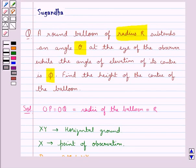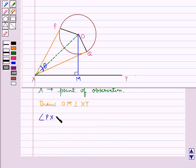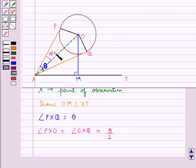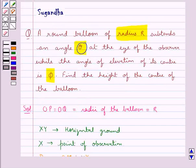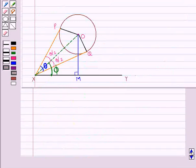In the question, the balloon subtends an angle theta at the eye of the observer, so X is the point of observation. This means angle PXQ is equal to theta. Therefore angle PXO equals angle OXQ, each equal to theta upon 2. Since OM is perpendicular to XY, angle OMX equals 90 degrees. The angle of elevation of the center is phi, so angle OXM equals phi.